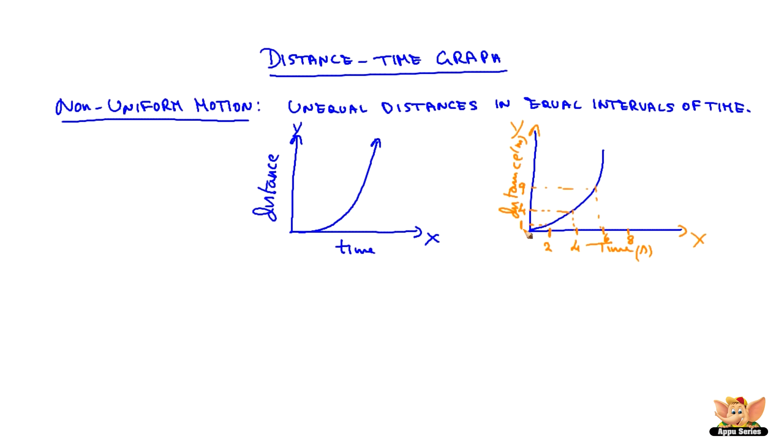It means when the object travels from O, in 2 seconds it traveled a distance of 1 meter. In 4 seconds, it traveled a distance of 4 meters. In 6 seconds, it traveled a distance of 9 meters.